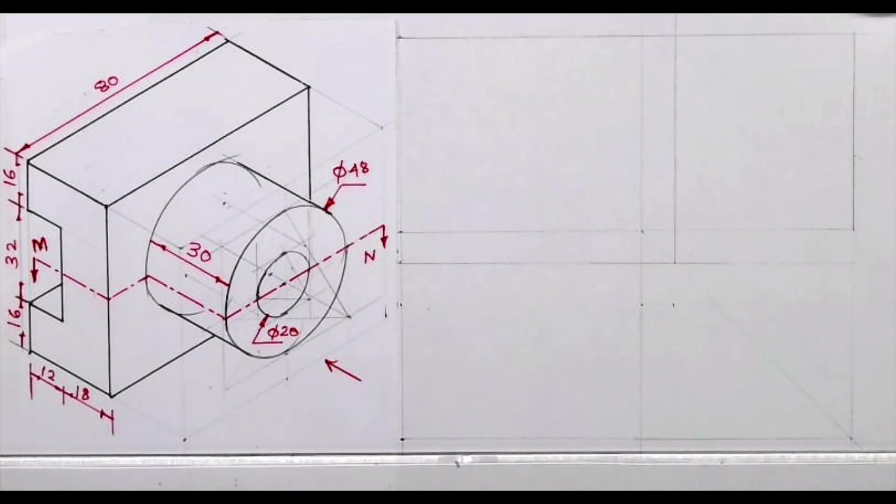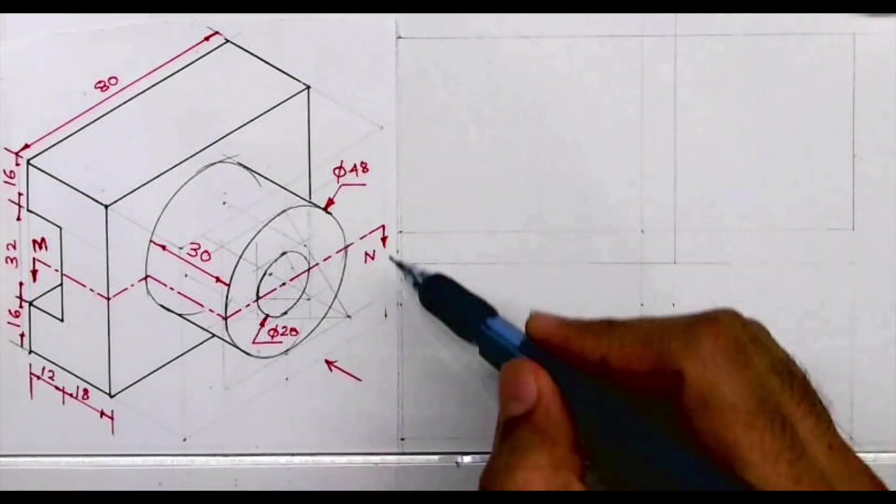Welcome to technical drawing. Today we will see this sum in section orthography. Now if you see this front view, top view, side view you need to draw. So length is 80, height is 64, and width is 60.